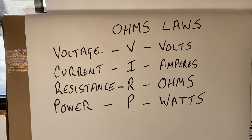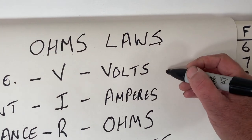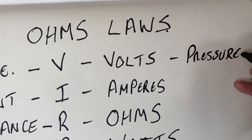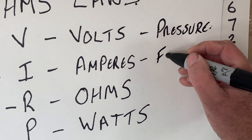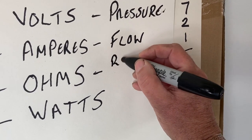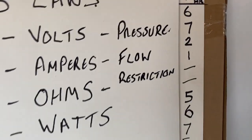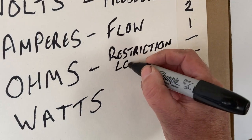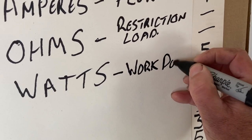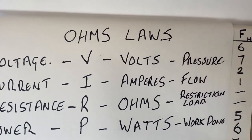To explain this a little further: if we think of water, volts is sort of pressure — think of pressure in a hosepipe pushing the water through. Amps is the flow in a pipe. Resistance could be a restriction or a load. And watts is actual work done. When we think of water, think of these — it might help the understanding a little bit.